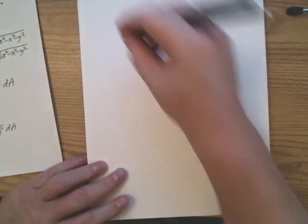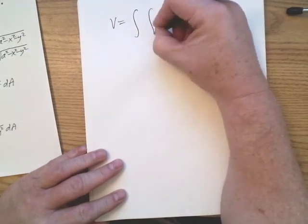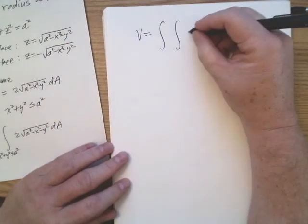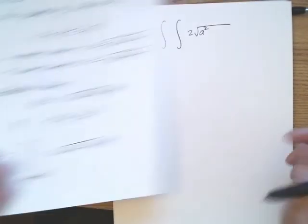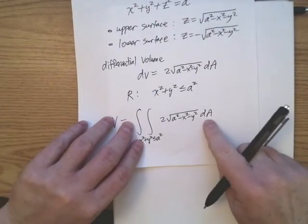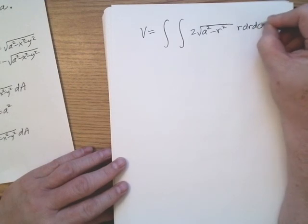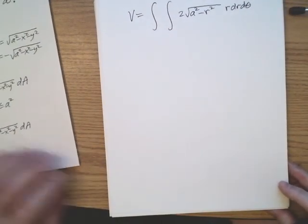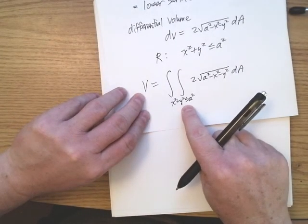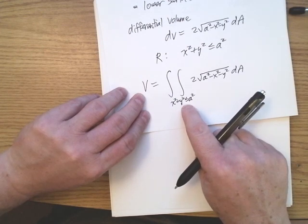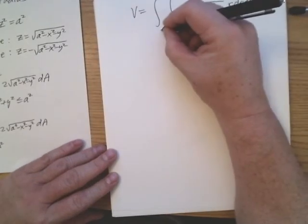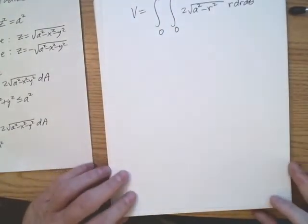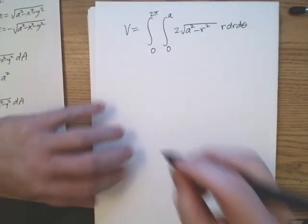In polar coordinates, x squared plus y squared becomes r squared, and dA becomes r dr d theta. The limits are r from zero to A and theta from zero to two pi, since we're integrating over the full disk of radius A. So V equals the integral from zero to two pi, integral from zero to A of two times the square root of A squared minus r squared times r dr d theta.